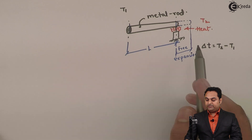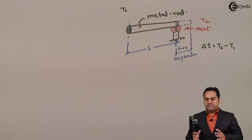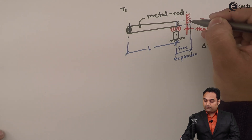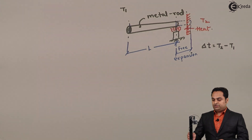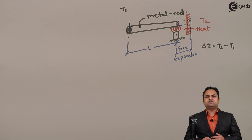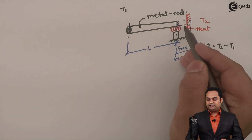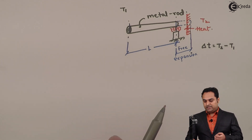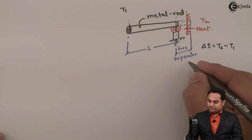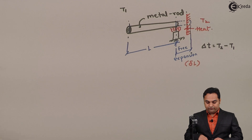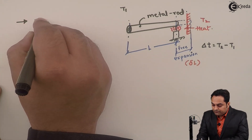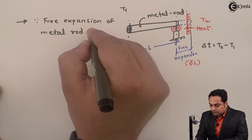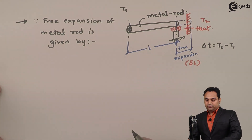As the rod is made of metal, when heat is provided that rod will expand, and suppose this much is the free expansion of the rod. If we are stopping this free expansion — suppose there is a wall here which is stopping it — then there will be stress developed inside the metal rod, and such stress would be called temperature stress.